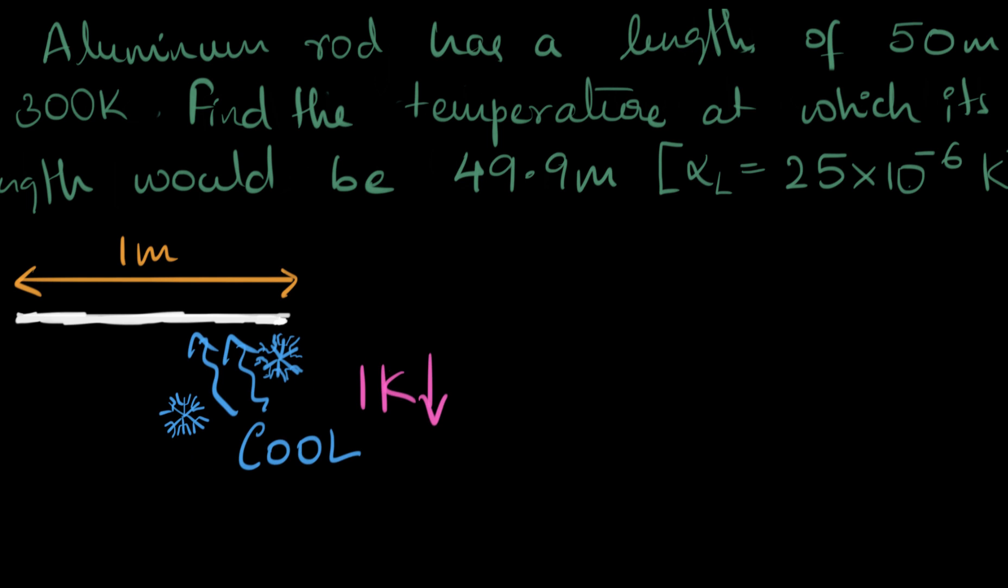And similarly, if you were to cool it down by one Kelvin, decrease its temperature by one Kelvin, then the rod would shrink in size by exactly 25 times 10 to the minus 6 meters. That is the meaning of alpha L.